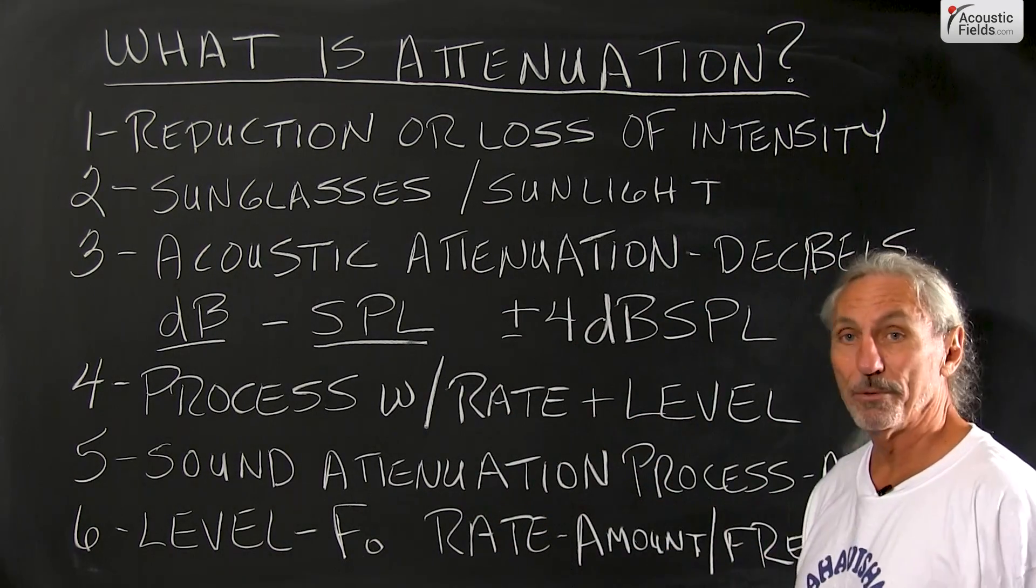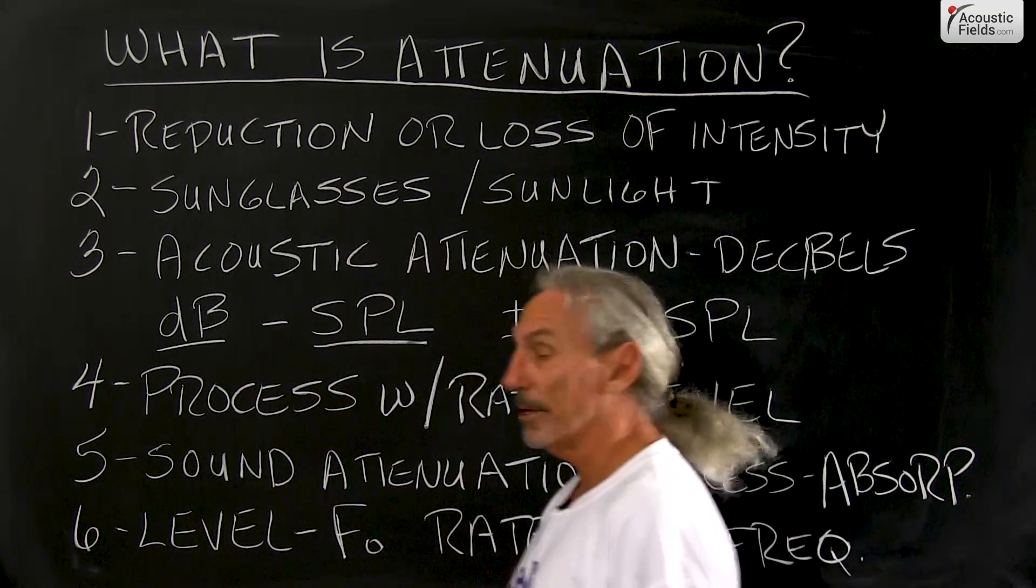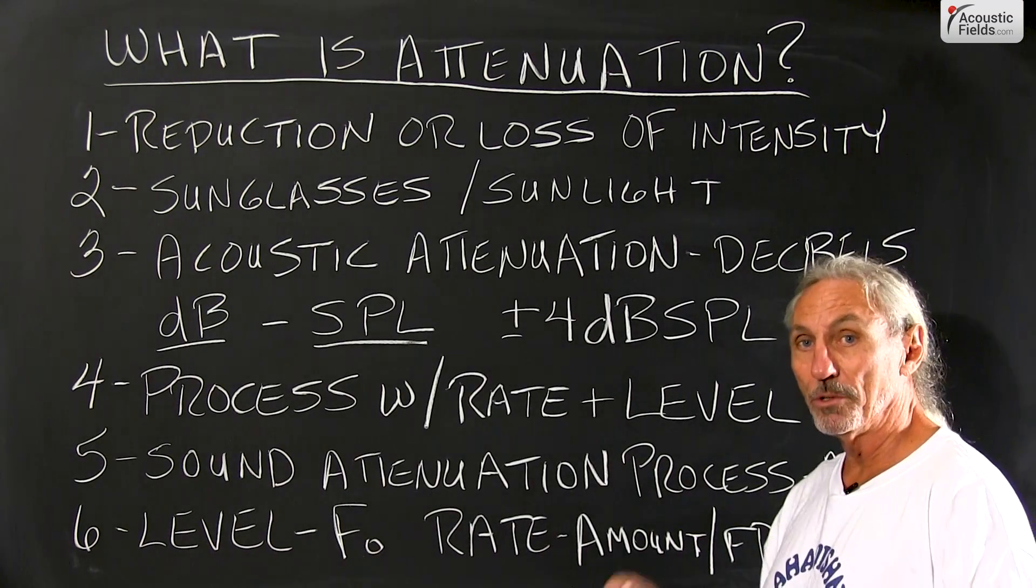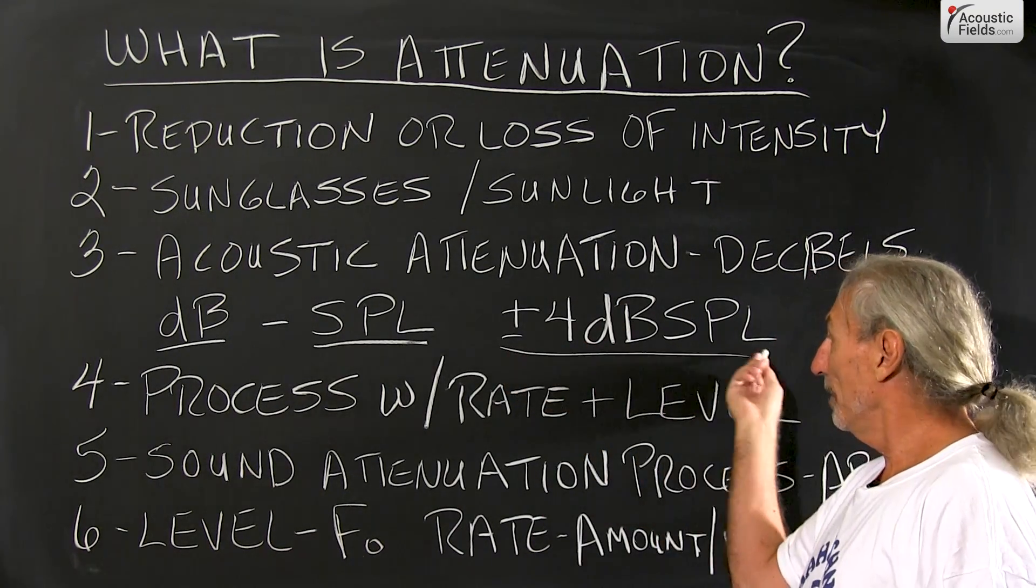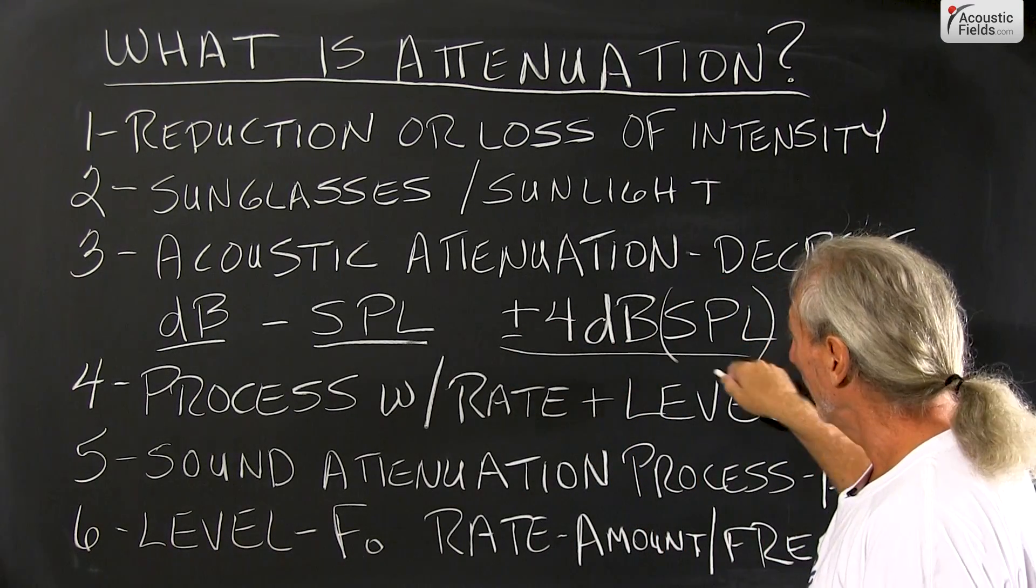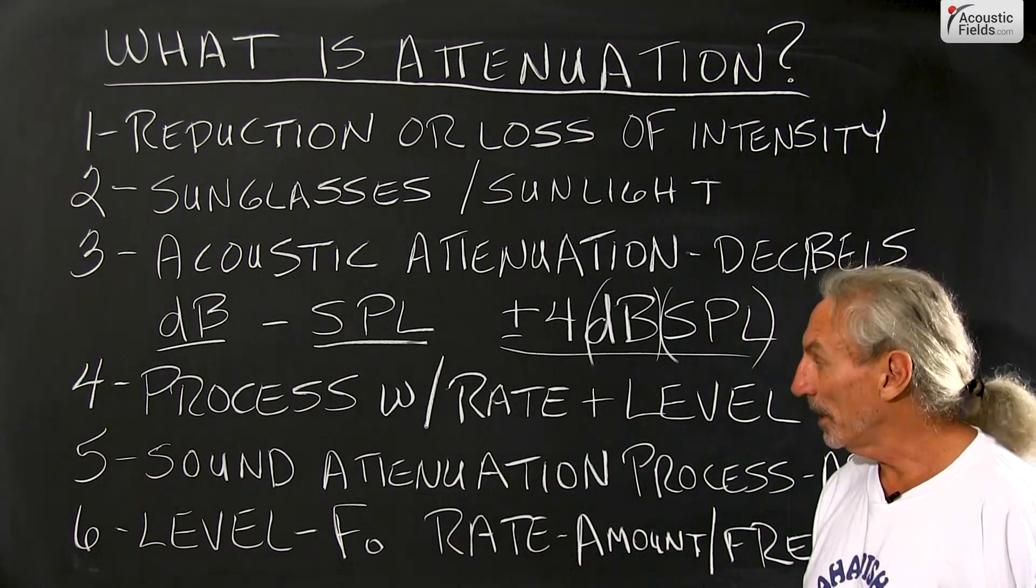In acoustics it's all about sound energy, so you've seen the term decibel. Well there's the symbol for decibels and that's how we measure the acoustic attenuation of sound. You always see things written plus or minus 4 dB SPL, sound pressure level. dB is our unit of measure, so those two always go together.